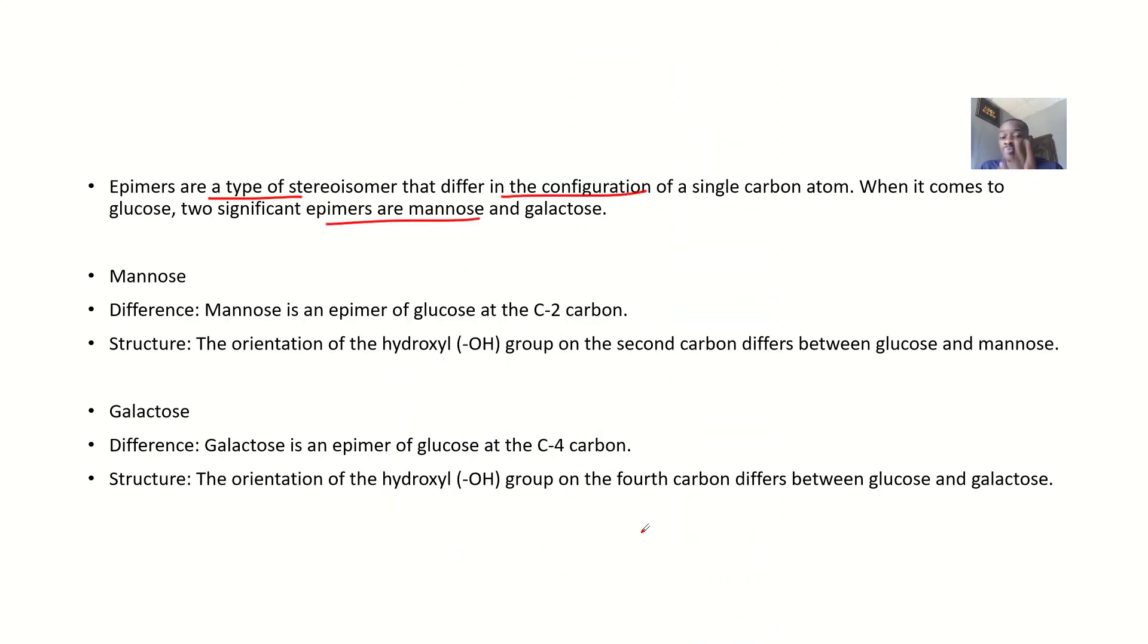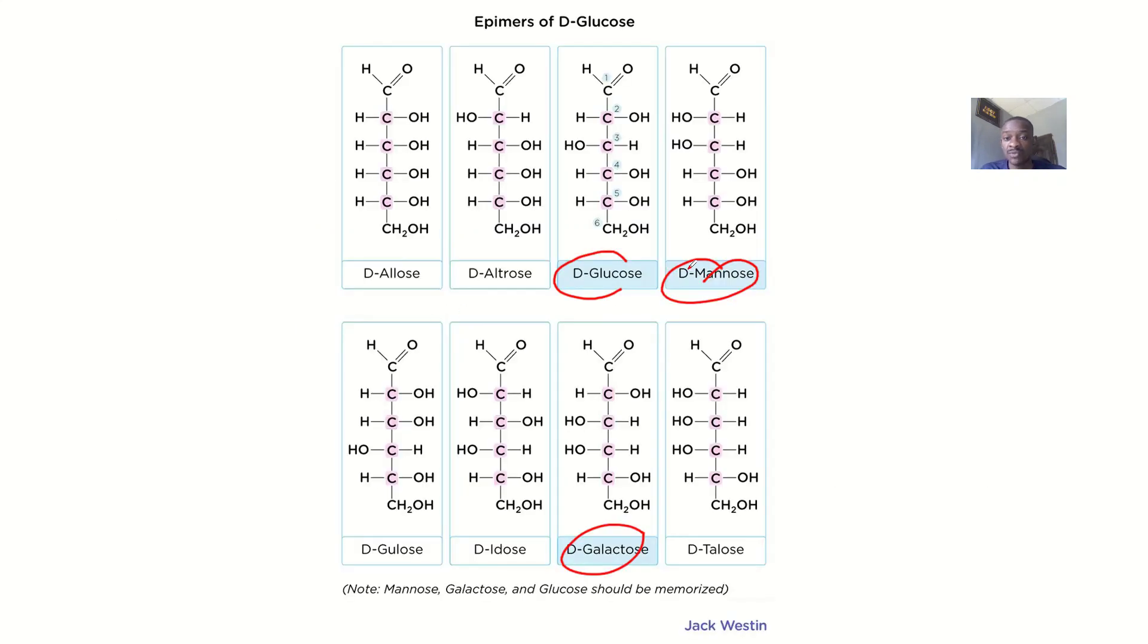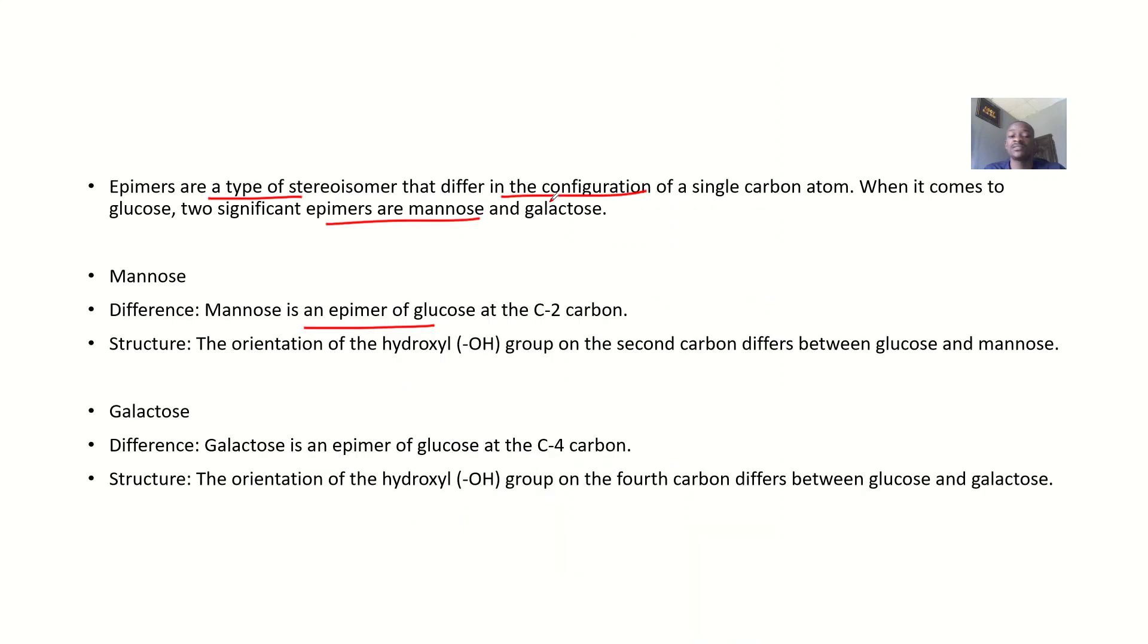For mannose, you talk about the difference. The difference is, it's an epimer of glucose at the carbon two atom. Can you see the OH here? This is carbon two. For glucose, the OH is on the right. For mannose, the OH is on the left. That's the difference. The orientation of the hydroxyl (OH) group on the second carbon differs between glucose and mannose, glucose being on the right, mannose being on the left.